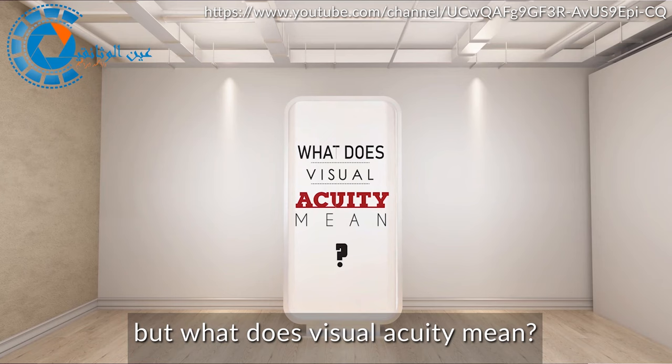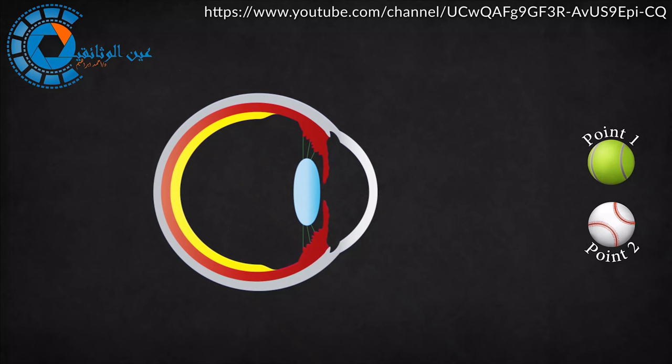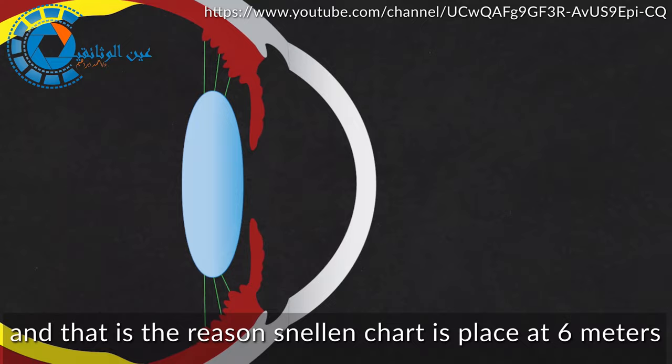But what does visual acuity mean? It means ability of the eye to discriminate between two separate points. But there is one condition. The eye must be completely relaxed.